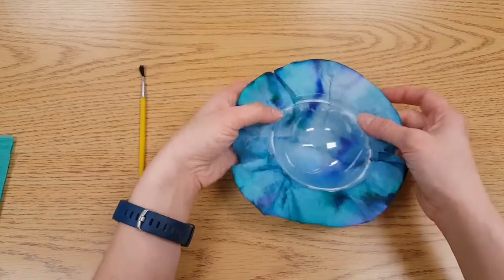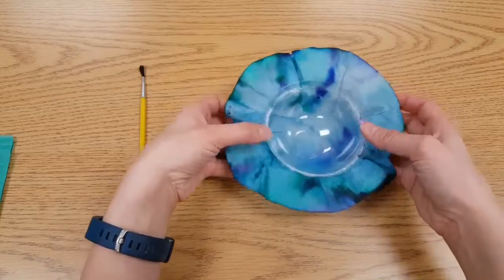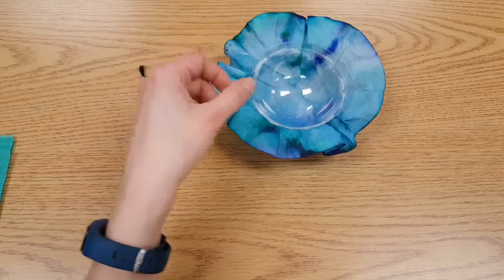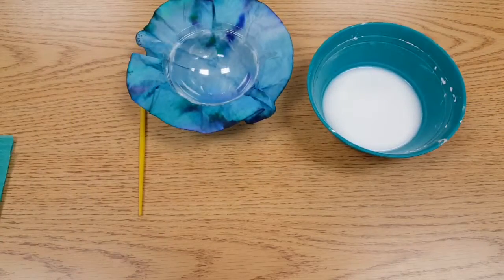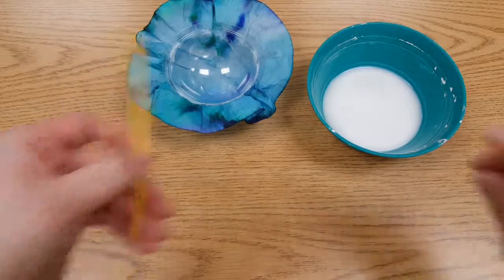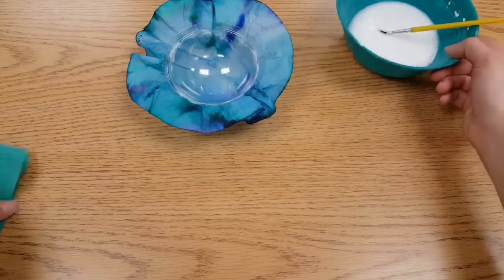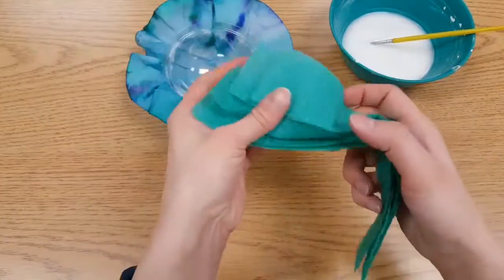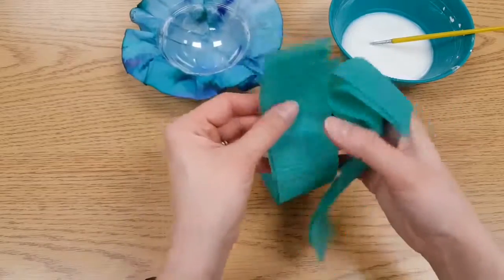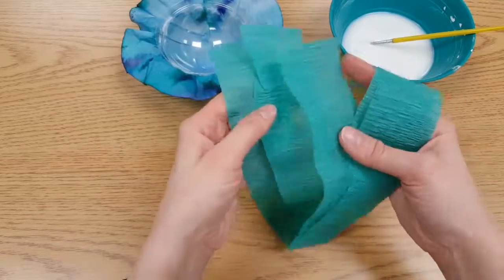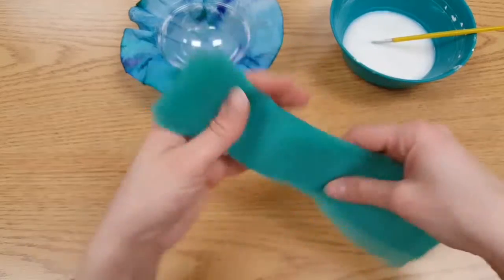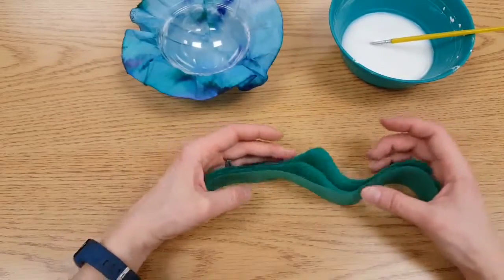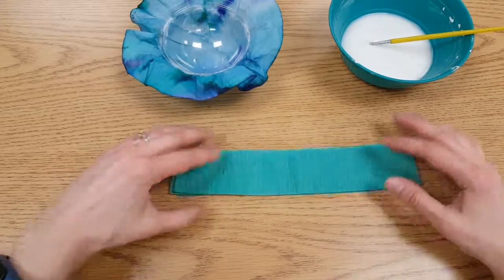So jellyfish have tentacles that hang down so we need to make some tentacles. We will use a different kind of glue to attach our tentacles and special glue brushes. And we will have pans full of some crepe paper. So you need four or five pieces of crepe paper. You choose what colors you would like. I chose this color because it matches my coffee filter.